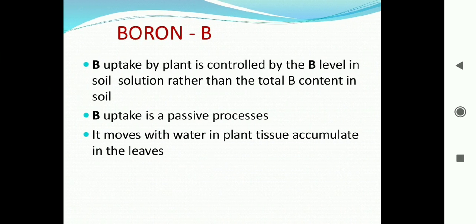The next element is boron. Boron is also one of the macro elements. Boron uptake by the plant is controlled by the boron level in soil solution rather than total boron content in the soil. Boron uptake is a passive process — it moves with water in the plant, accumulates in leaves, and is absorbed through passive water absorption.